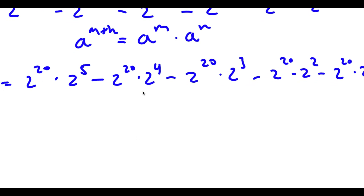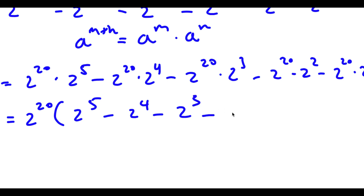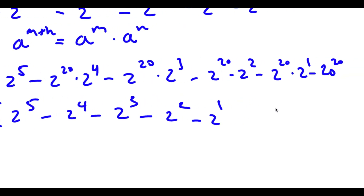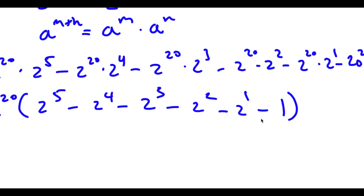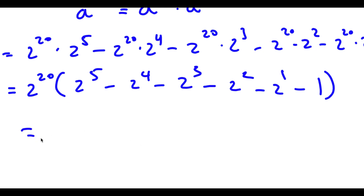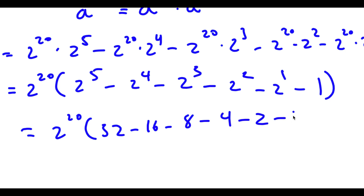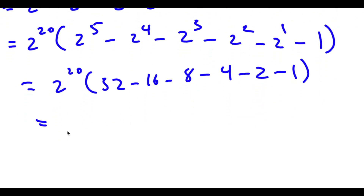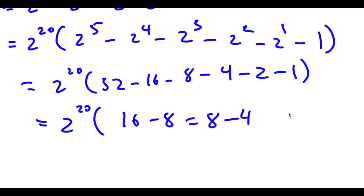Now because all of these terms have 2 to the power of 20 in them, I can factor that out. So now I have 2 to the power of 20 times 2⁵ minus 2⁴ minus 2³ minus 2² minus 2¹ minus 1. Now 2⁵ is 32, 2⁴ is 16, 2³ is 8, 2² is 4, 2¹ is 2, and I have 1 at the end. So 32 minus 16 is 16, minus 8 is 8, minus 4 is 4, minus 2 is 2, and 2 minus 1 is 1.